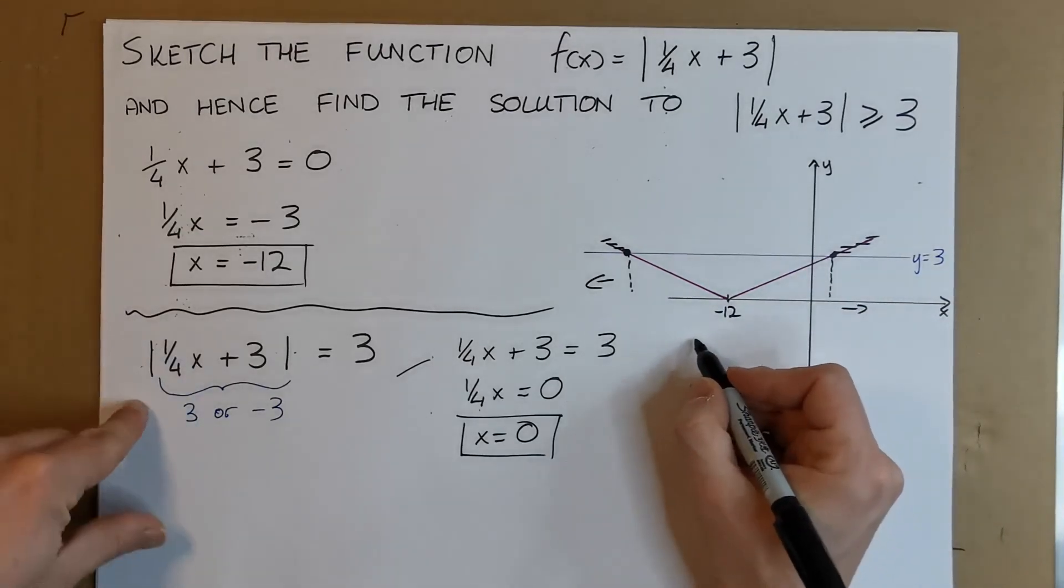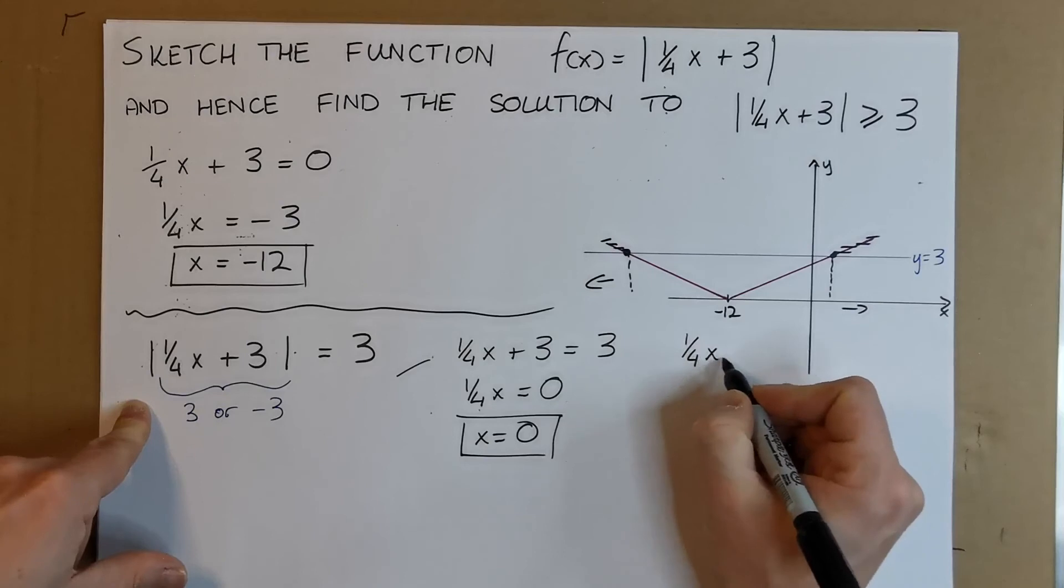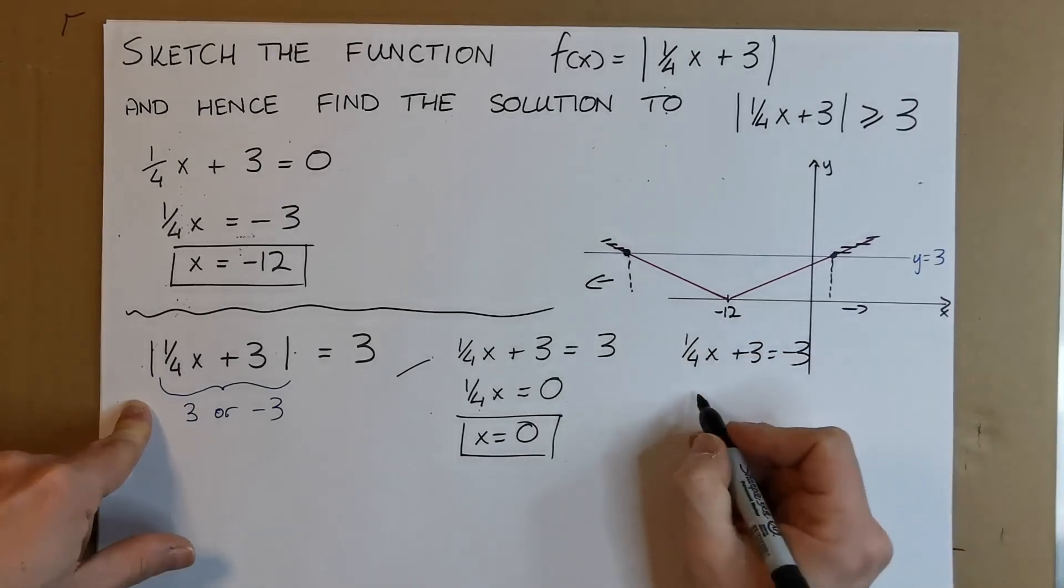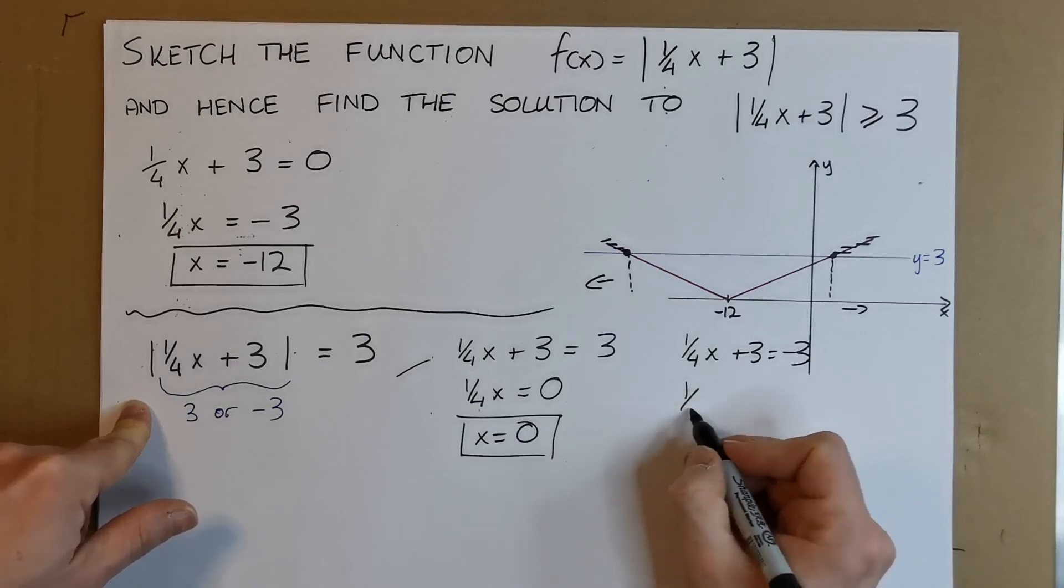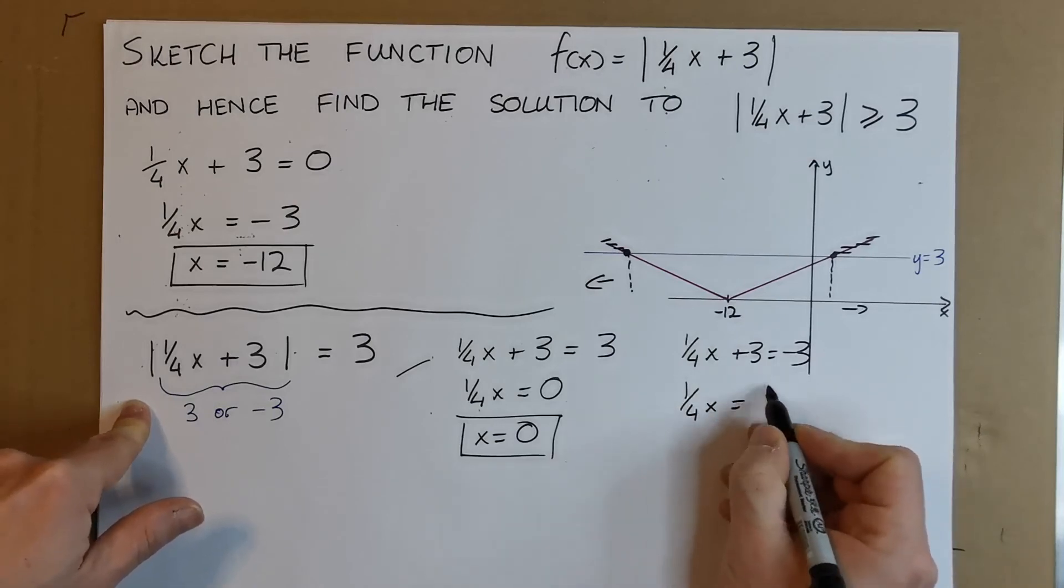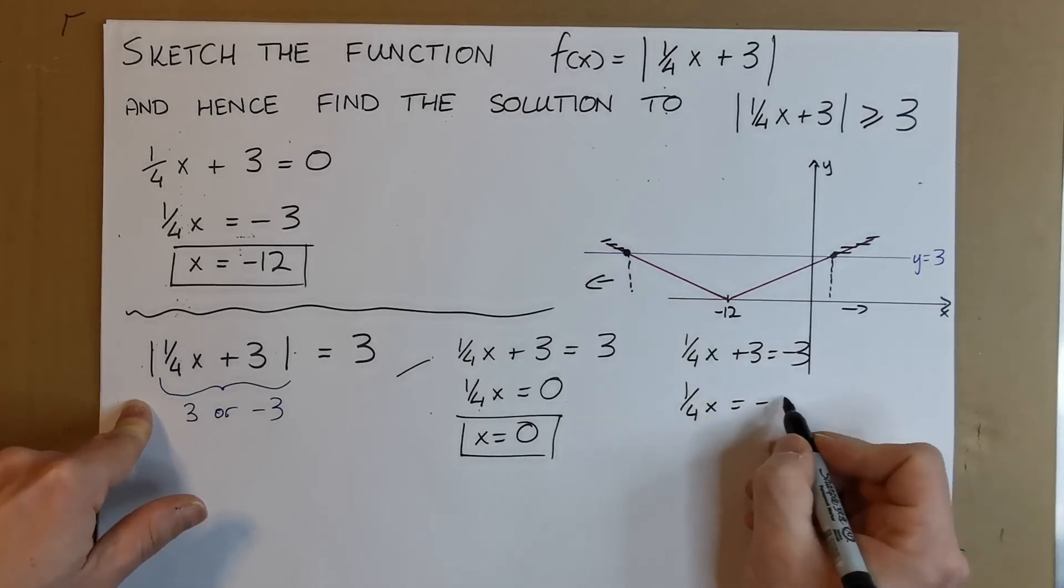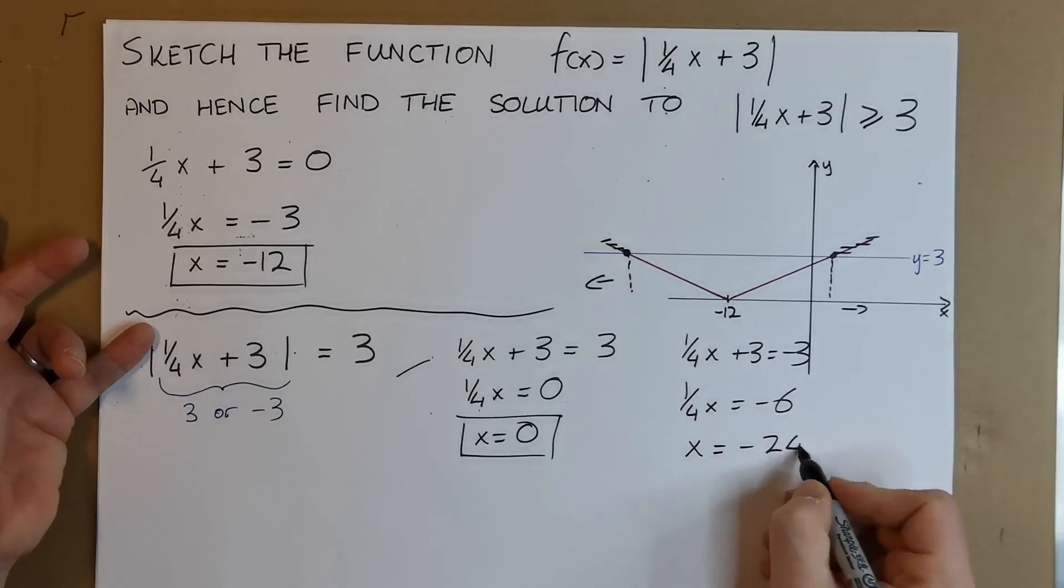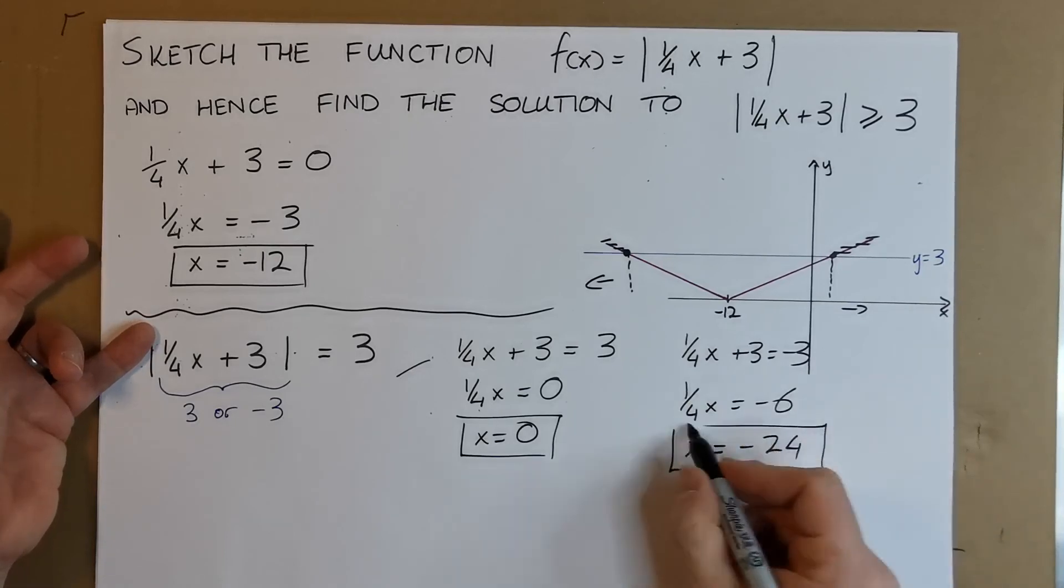The other option is when 1/4x + 3 = -3. Rearranging, 1/4x = -3 - 3 = -6. Multiply both sides by 4, that gives us x = -24. So there's the other point.